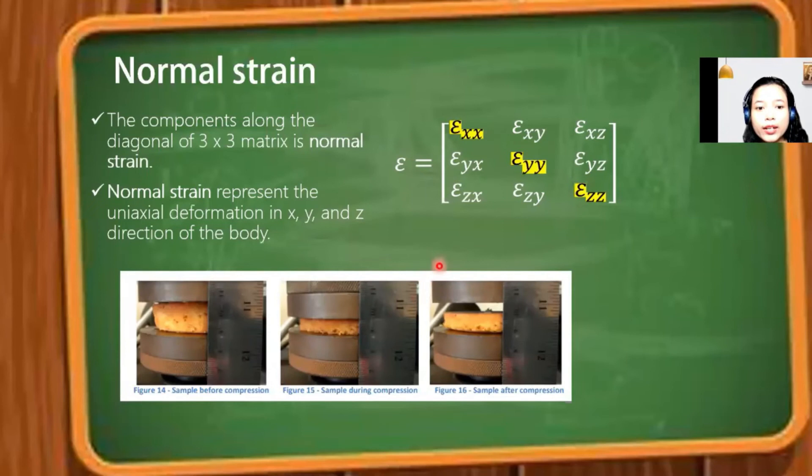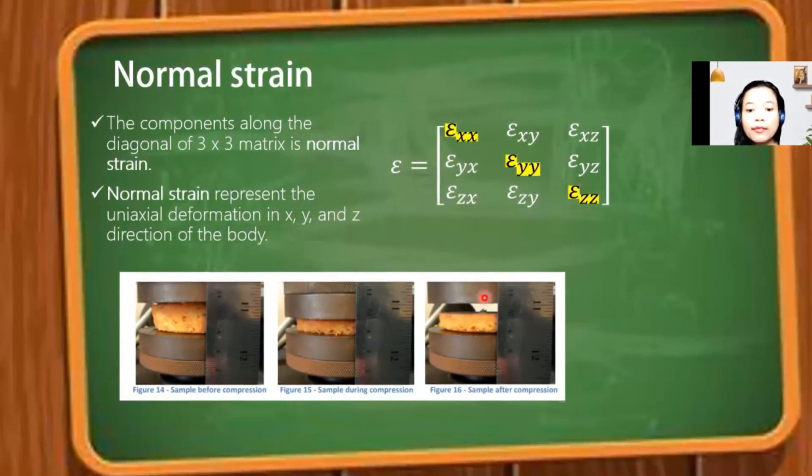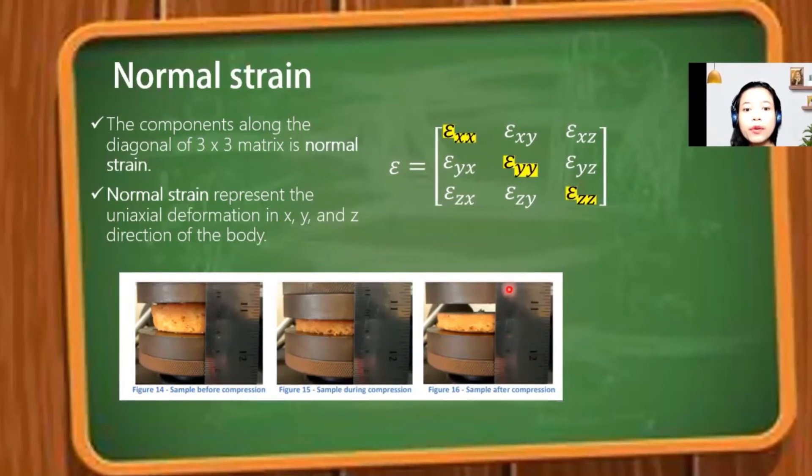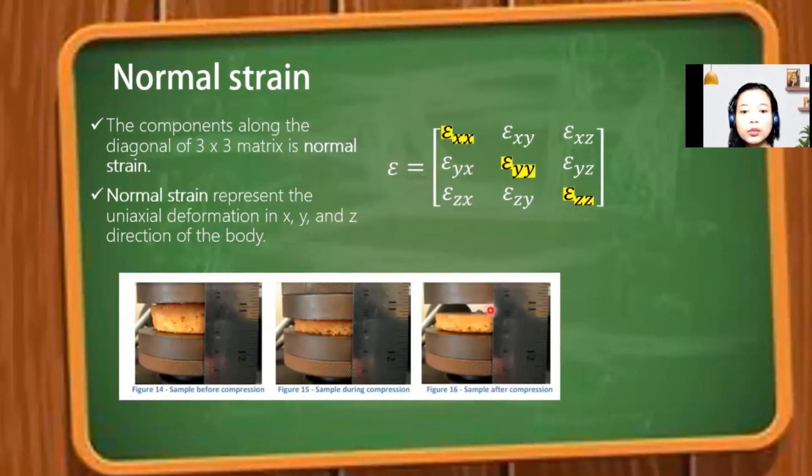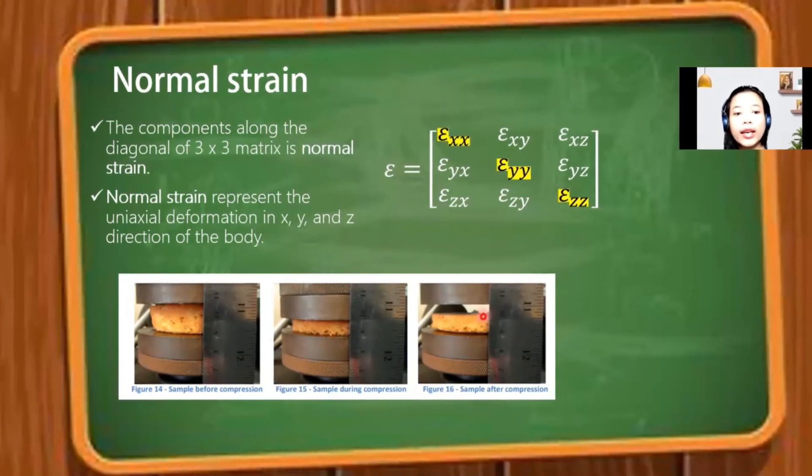As an illustration, a cake is pressed in the vertical direction as depicted in the figure. After the compression, there is deformation in the vertical y direction. It can be said that the cake experiences normal strain.